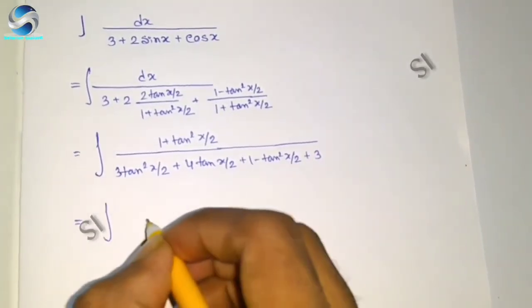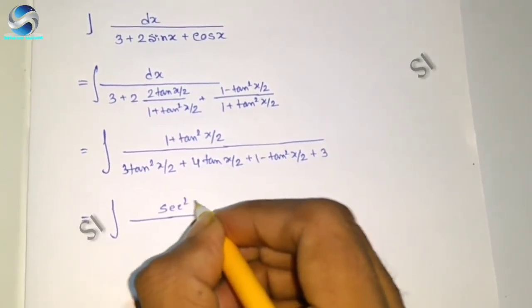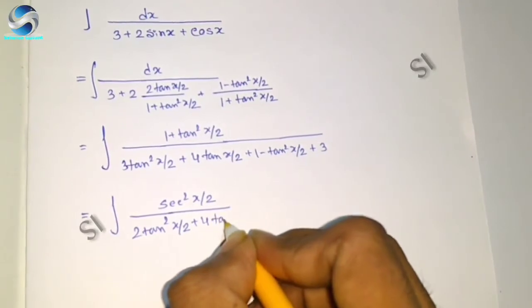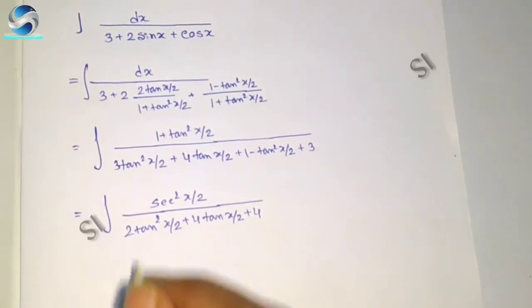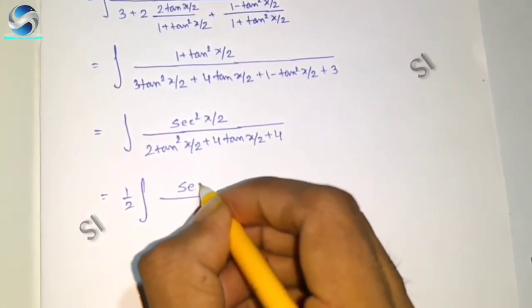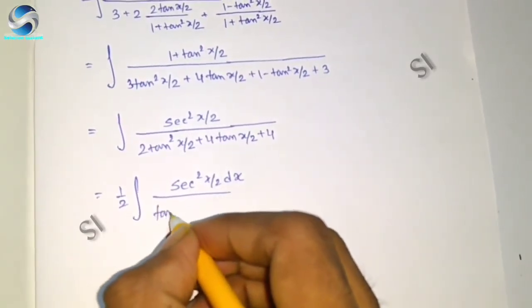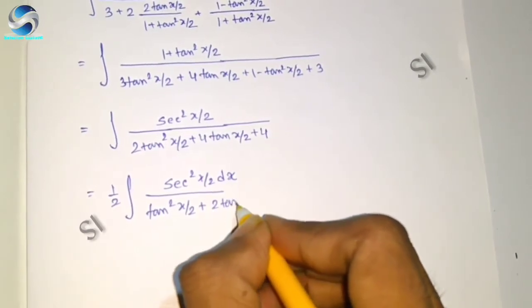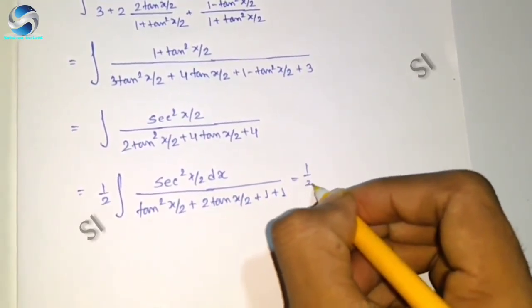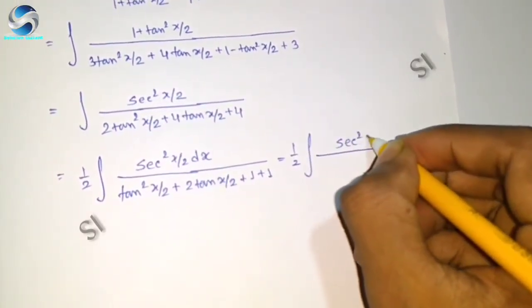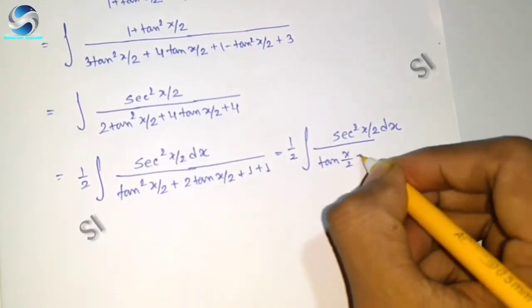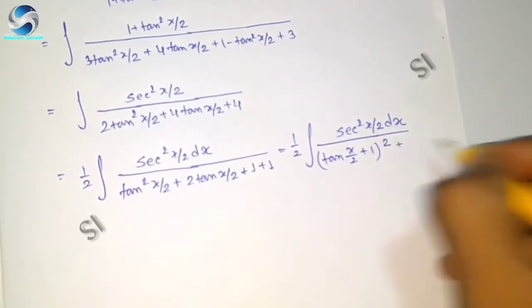That equals integration of sec²(x/2) dx divided by 2 tan²(x/2) plus 4 tan(x/2) plus 4. That equals half integration of sec²(x/2) dx divided by tan²(x/2) plus 2 tan(x/2) plus 1 plus 1, which equals half integration of sec²(x/2) dx divided by (tan(x/2) + 1)² + 1².